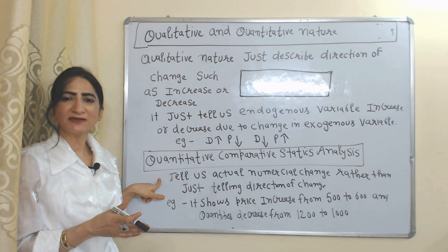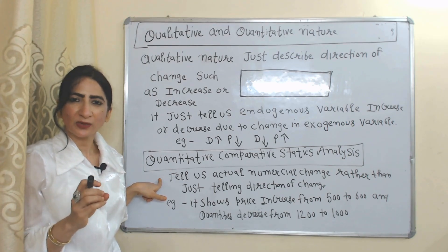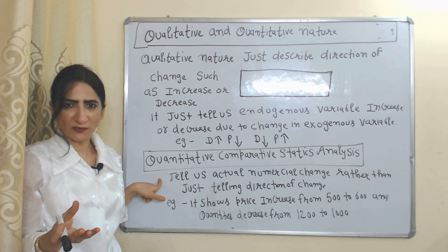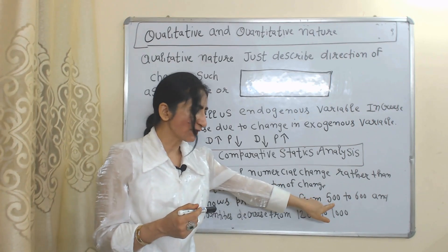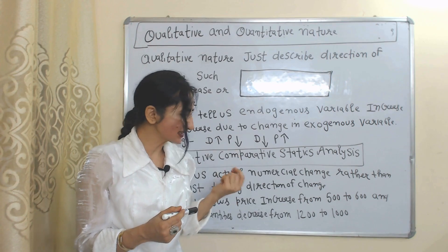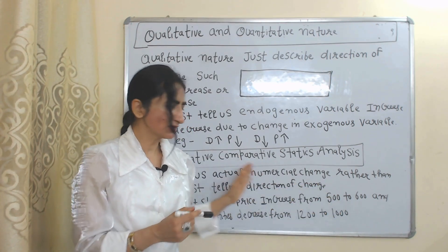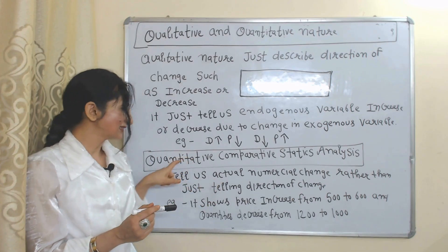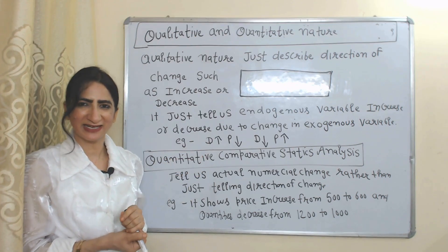Quantitative nature describes change in terms of numbers. For example, when price increases from 500 to 600, demand decreases from 1200 to 1000. Here, the change is described in terms of numbers, which is why it is called quantitative comparative static analysis.